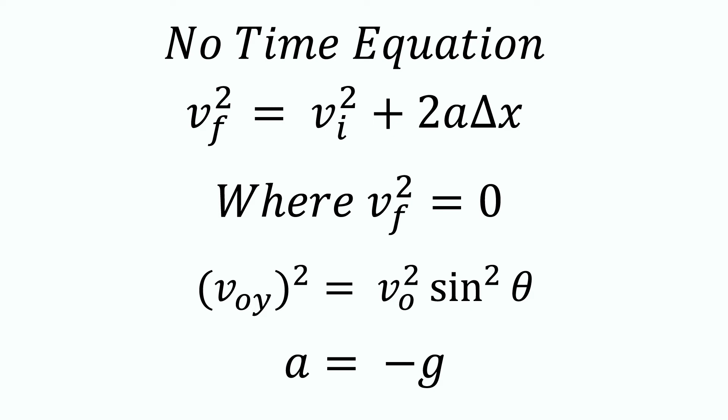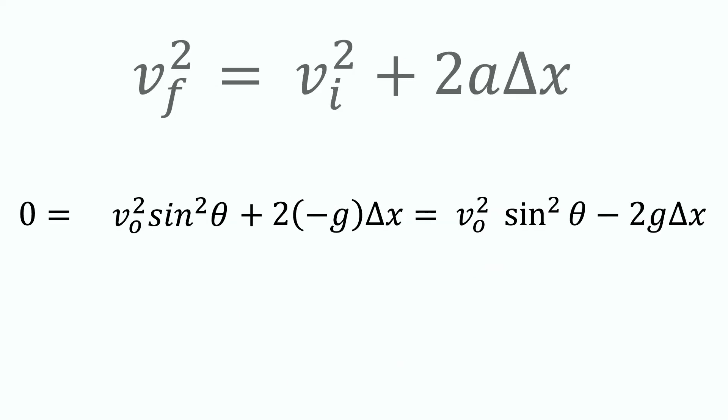Noting that at the peak of its trajectory, the v final squared is zero. The initial squared is v naught squared sine squared theta. And the acceleration due to gravity is negative g. So we have zero equals v naught squared sine squared theta plus 2 times negative g times delta x. We are solving for delta x.